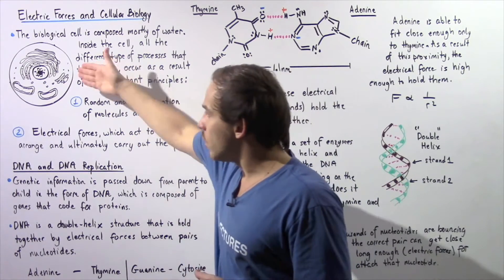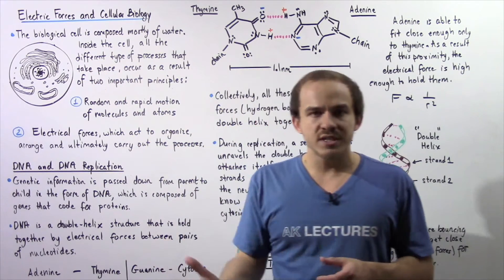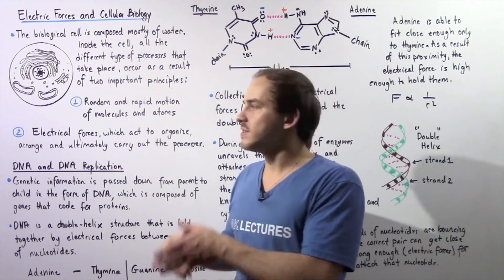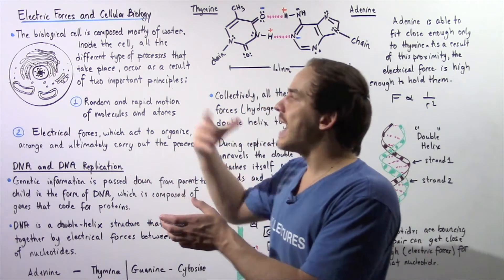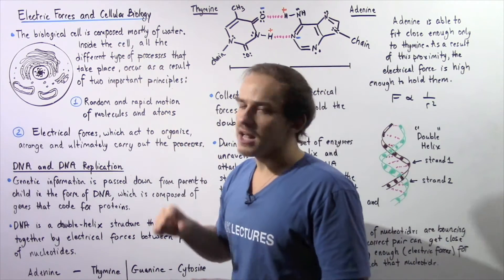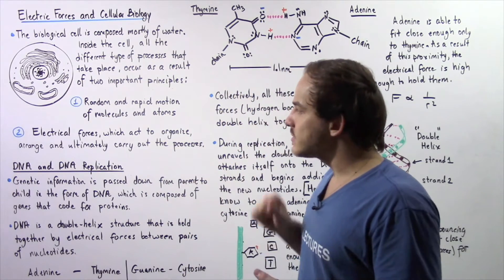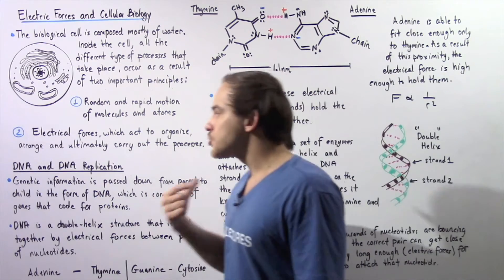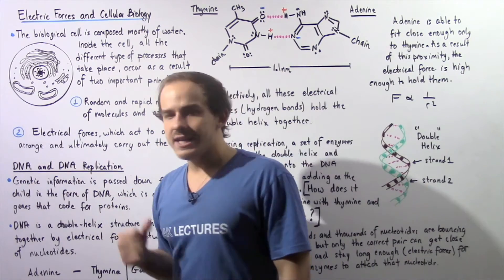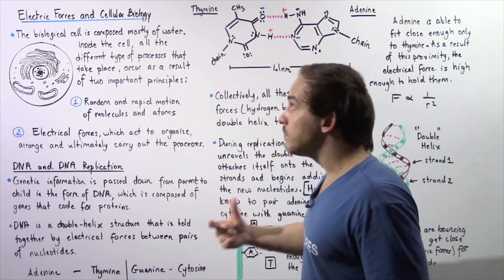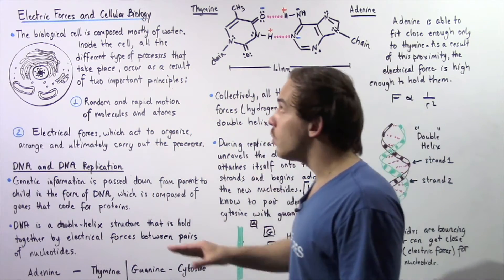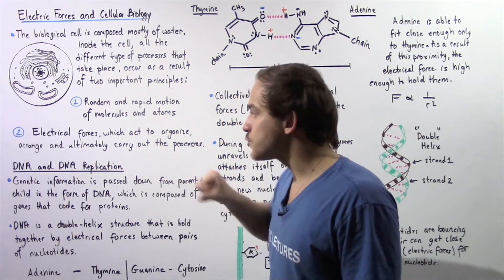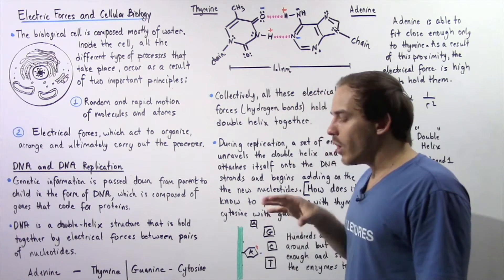We have other types of organelles like the endoplasmic reticulum and the Golgi apparatus in which electric forces play a very important role. For example, within the Golgi apparatus, we have proteins which are packaged and then sent off to different parts of the cell, outside the cell, and within the cell membrane. In this lecture, we are going to focus primarily on discussing the structure of DNA and DNA replication and the role electric forces play within the structure and this replication.